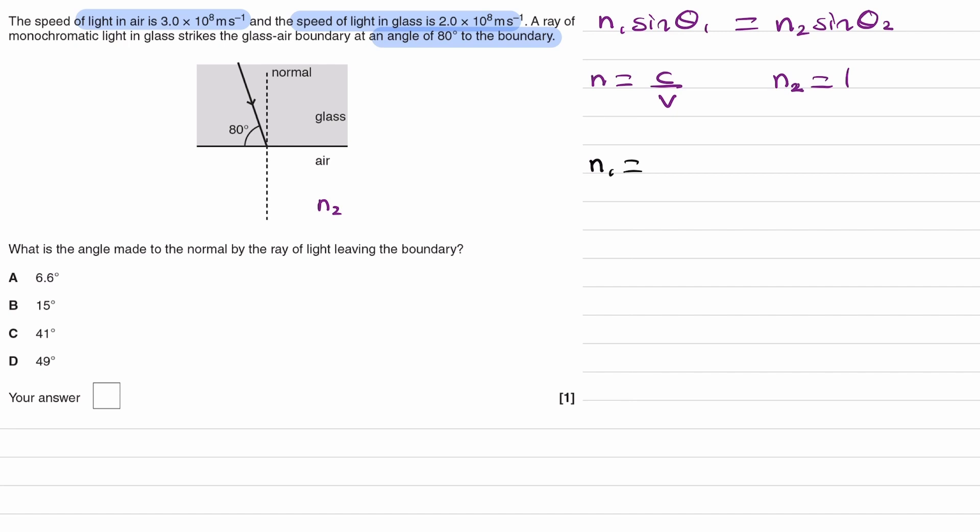The refractive index of glass, we'll call that n1, would be equal to the speed of light in a vacuum, 3 times 10 to the 8, divided by the speed of light in that particular medium, which is 2 times 10 to the 8. That will be 1.5 or 3 over 2.